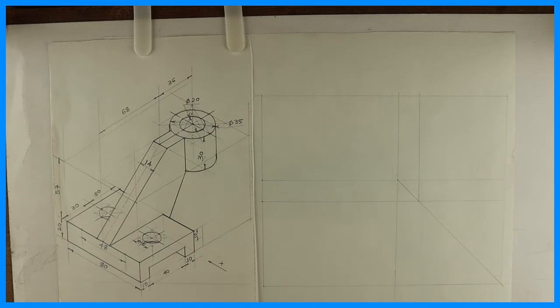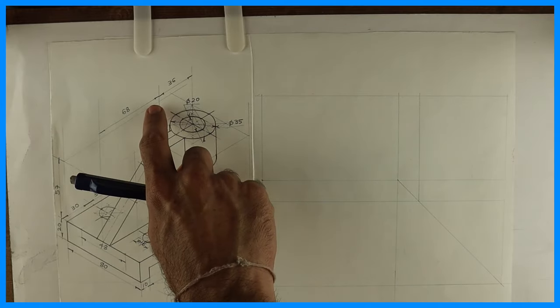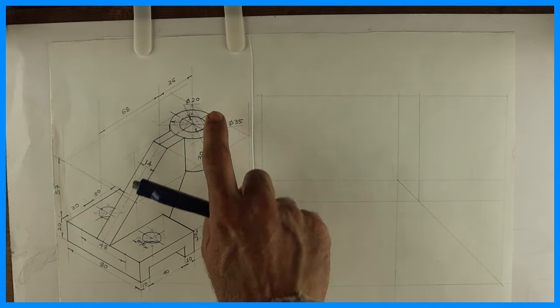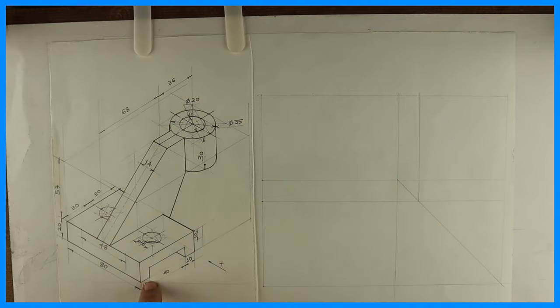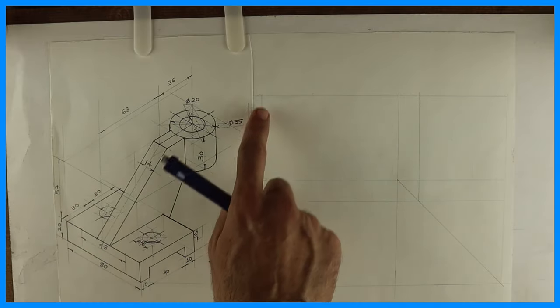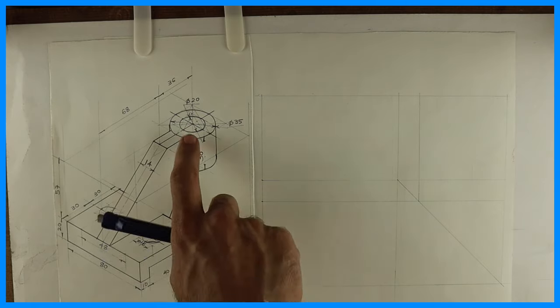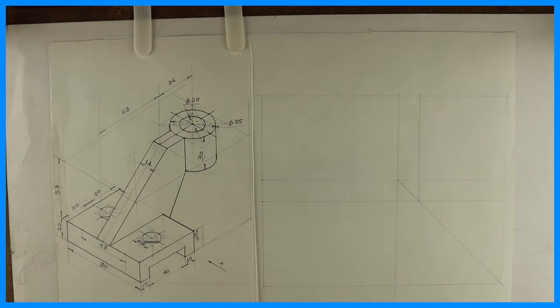Welcome to technical drawing. Today we are going to solve this sum in orthographic projection in first angle. We'll see from here front view, top view, and side view. Now length is 68 plus 36 plus 17.5, so 121.5. Height is 77 and width is 80. First we will draw layout and start with top view because we can see circle in top view.